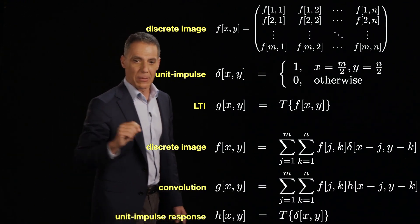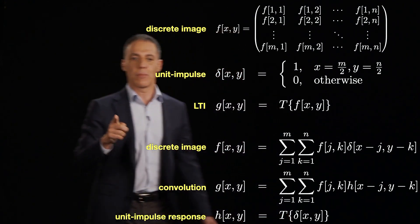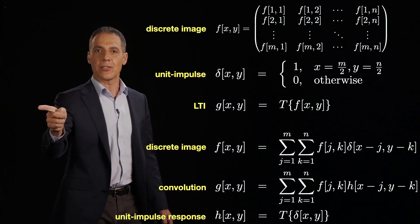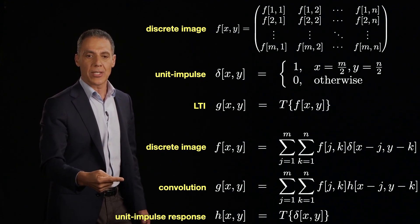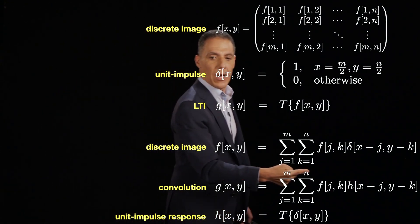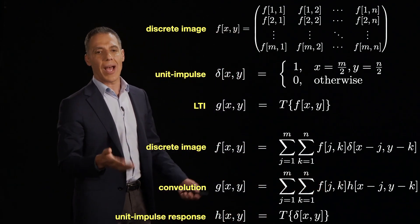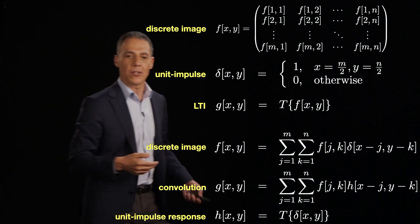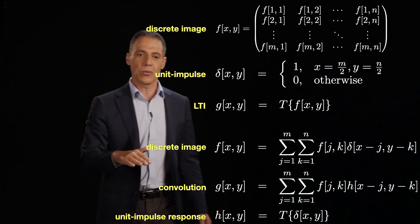So same game as before. If we take this representation and we put it into a linear time invariant system, then what's going to happen is that our output is going to be a sum of scaled versions of the unit impulse response. And I won't derive it because it's just numerically a little messy, but it's exactly the same thing, just from 1D to 2D.